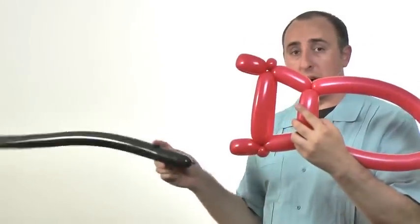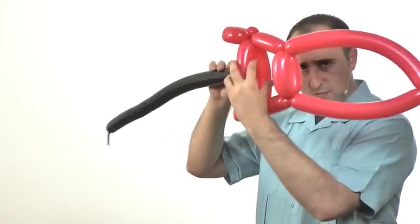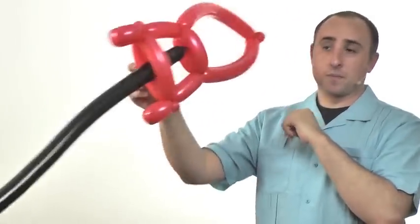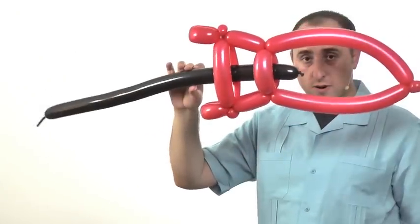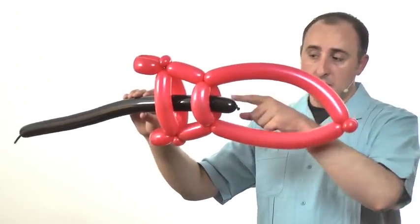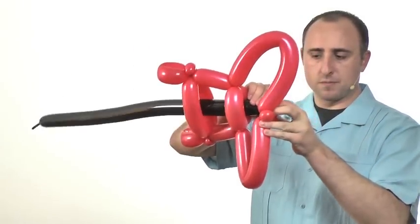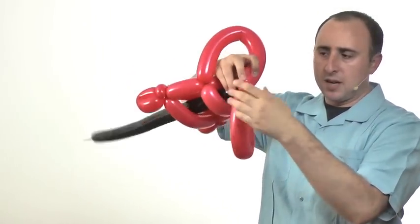Now comes the sort of tricky part. We're going to take this black 260, we're going to thread it through in between those two right there. And we're going to thread it through just a little bit. Those two right there. Now this part here we're going to twist into this part here by bending it forward and taking that knot and wrapping it around and into there.